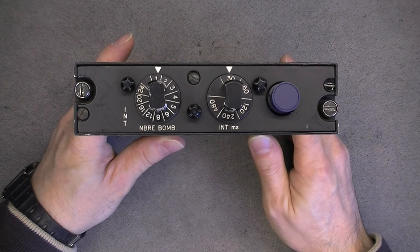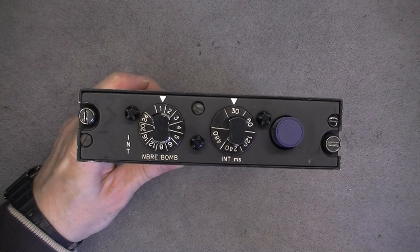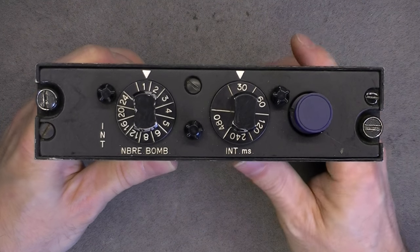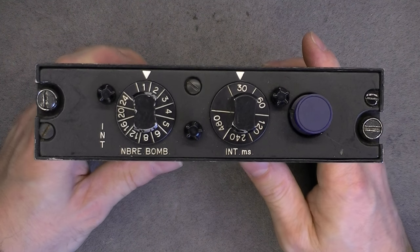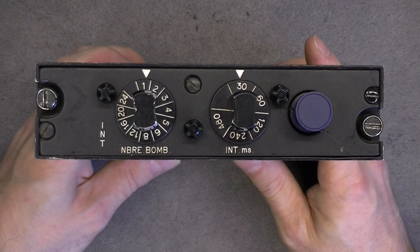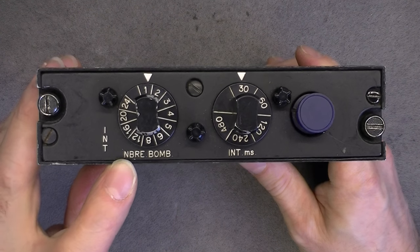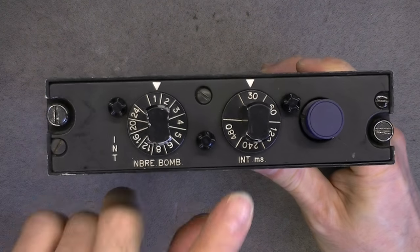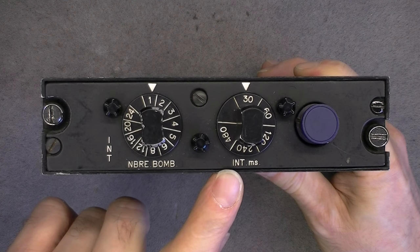So what is the purpose of an intervalometer? In fact it is for bomber aircraft when bombing dumb bombs which are not guided. You set the number of bombs you will release at each time and the delay between two bombs.